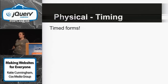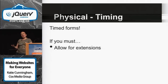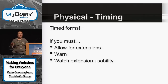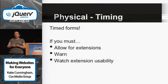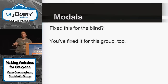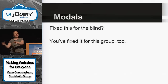Timing: timed forms. If you have anything where a form must be completed within 15 minutes — okay, I understand sometimes you have to do this for tickets or voting. But if you must, allow for time extensions — let them ask for 10 more minutes. Warn them well before their time is up, not just with a minute to go, because it might be hard for them to even reach the button for an extension. I had a guy where users would time out after 15 minutes, and he'd warn them, but there was no way to get to the 'give me more time' button by tabbing. If you fix modals for the blind — moving focus to the modal — you fix it for this group too.